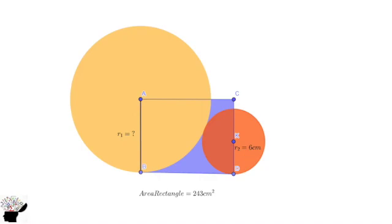We know that the radius of a circle is from the center of the circle to any point of the circumference. So if I draw this line segment here, the radius of the bigger circle, which is r1, extends to this end. The same applies to the smaller circle — the radius goes from K to the point of intersection.